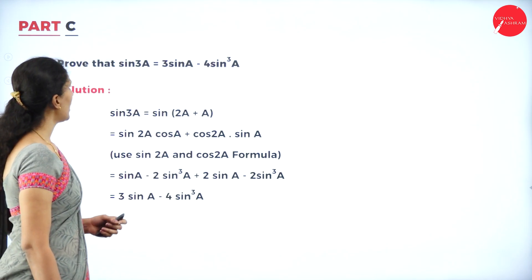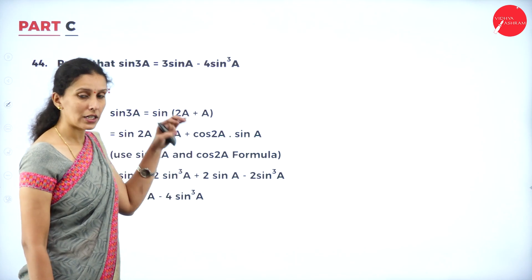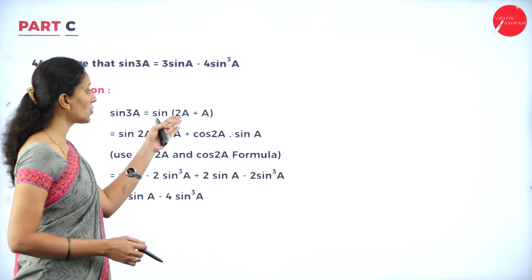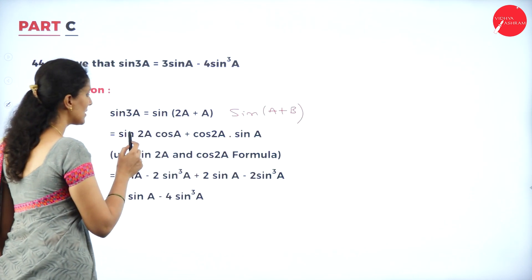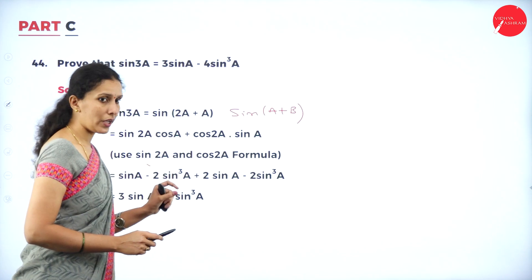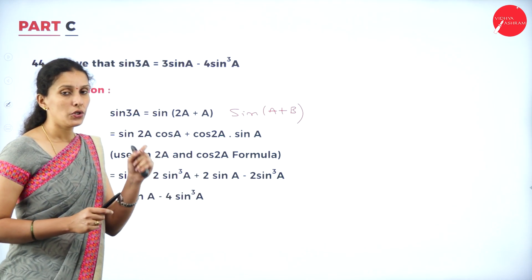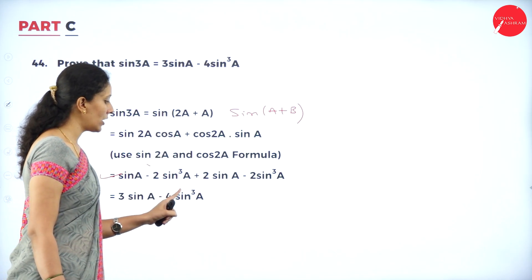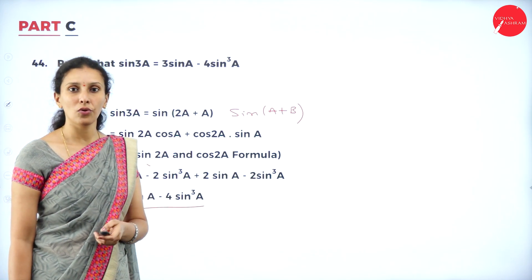Prove that sin 3a = 3 sin a - 4 sin³a. Express sin 3a as sin(2a + a). Using the formula sin(A+B) = sin A cos B + cos A sin B, then substitute sin 2a = 2 sin a cos a and cos 2a = 1 - 2 sin²a. After multiplying and simplifying, we get sin a - 2 sin³a + 2 sin a - 2 sin³a, which gives the result 3 sin a - 4 sin³a.